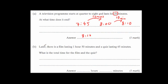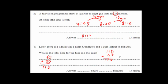Later, there's a film that lasted one hour 50 minutes and a quiz that lasted 45 minutes. What is the total time for the film and the quiz? We've got hours and minutes, so the easiest approach is to convert one hour 50 minutes into minutes: one hour is 60 minutes, plus 50 minutes gives 110 minutes. The film lasts 110 minutes and the quiz lasts 45 minutes, so 110 plus 45 equals 155 minutes in total.